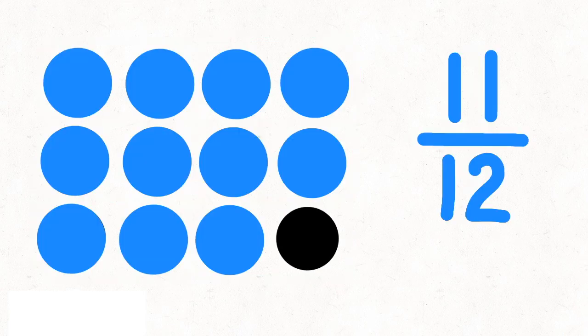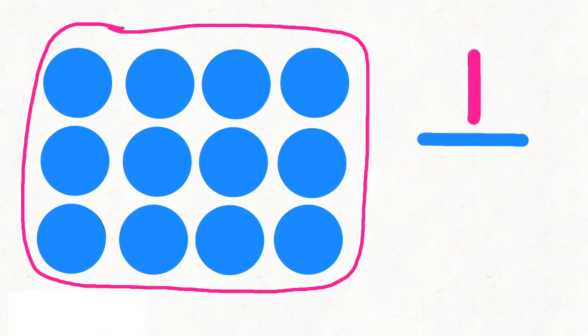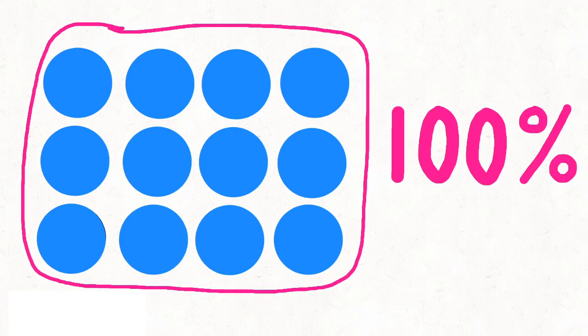For this one, let's color in 11 of the 12 dots. This fraction is considered 11 twelfths — no need to simplify it. Now let's color in all 12 of the 12 dots. That means I've colored in all 12 out of 12 — I colored in the whole group. Since there's only one group, that's the same as one group out of one group, which equals 1, or 100% of the group.